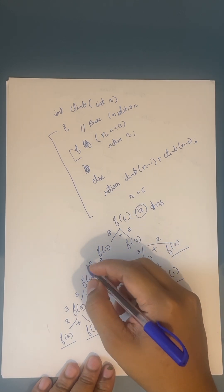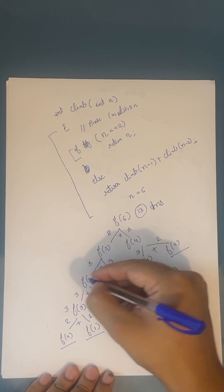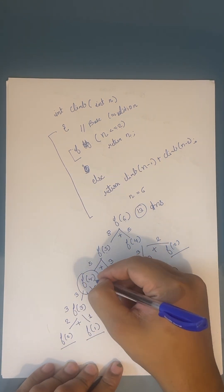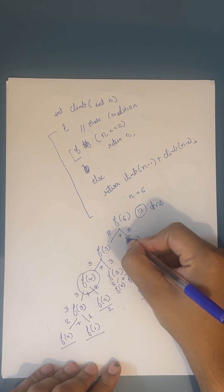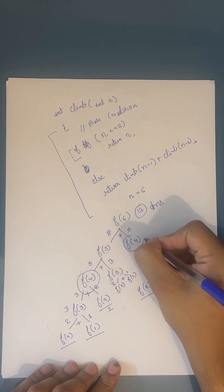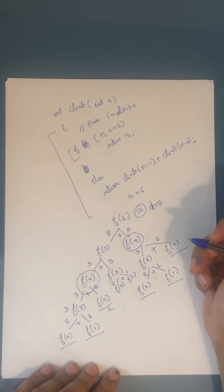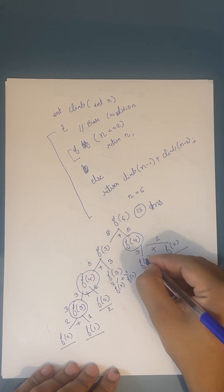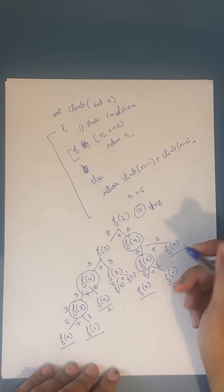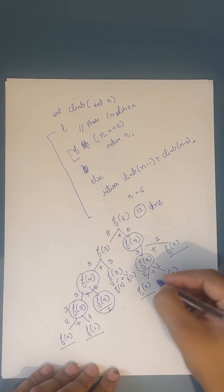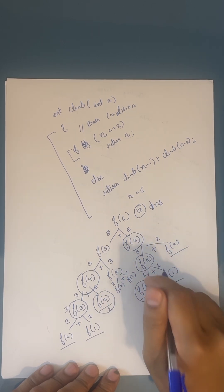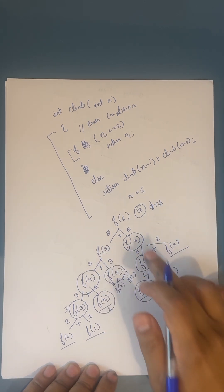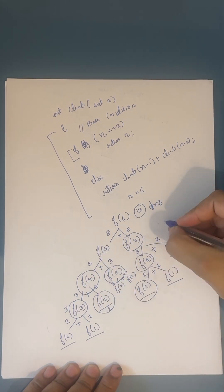If you see, we have overlaps here. We have f(4) already calculated but at the same time we are again calculating f(4). We are again calculating f(3) here — already calculated but we are calculating f(3), f(2) again here. So these are the overlapping subproblems.